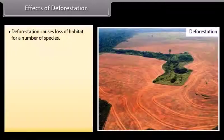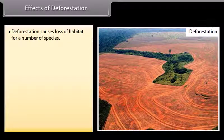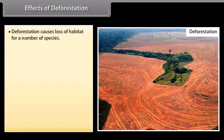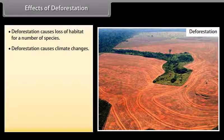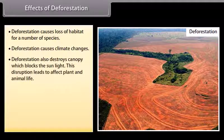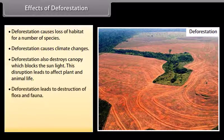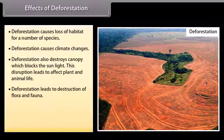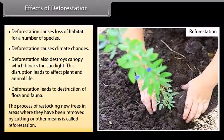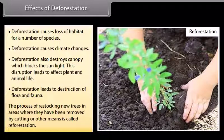Effects of deforestation: it causes loss of habitat for a number of species; it causes climate changes; it destroys the canopy which blocks sunlight, disrupting plant and animal life; and it leads to destruction of flora and fauna. The process of restocking new trees in areas where they have been removed by cutting or other means is called reforestation.